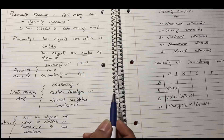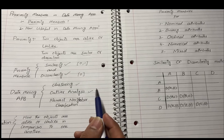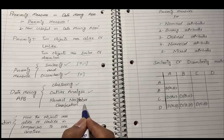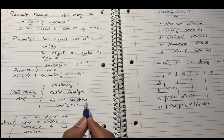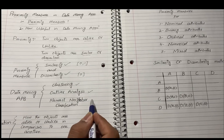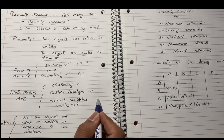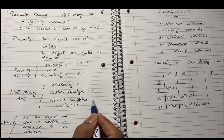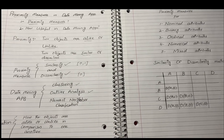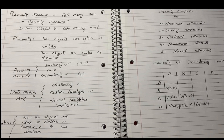Similarly, in nearest neighbor classification, suppose you have to find how much distance exists between objects in the given data — we will use proximity measures. By definition, proximity measures describe how objects are alike or unlike in comparison to one another.